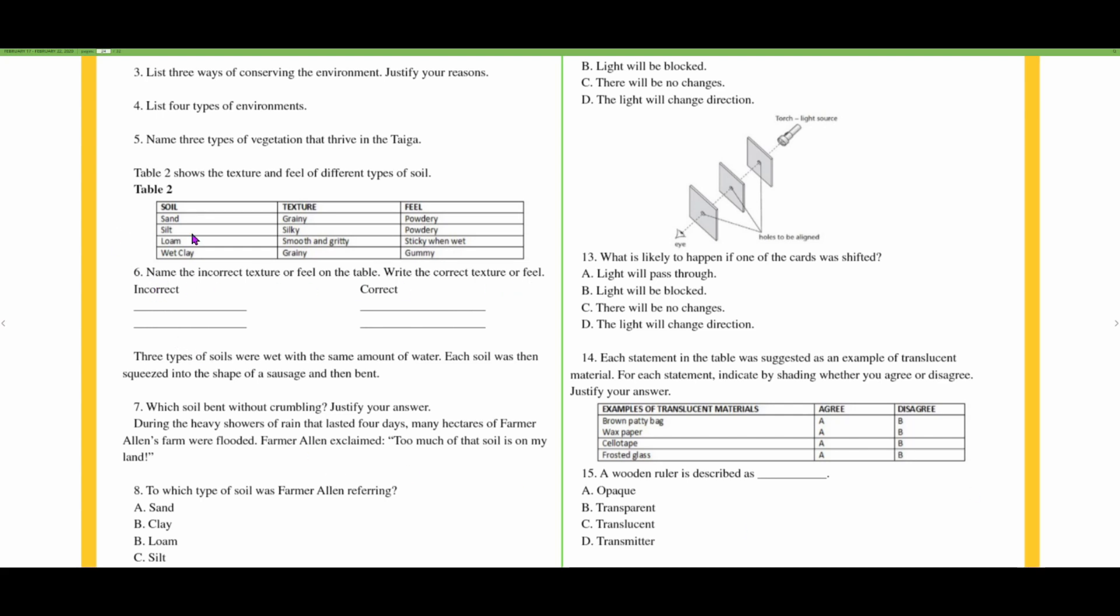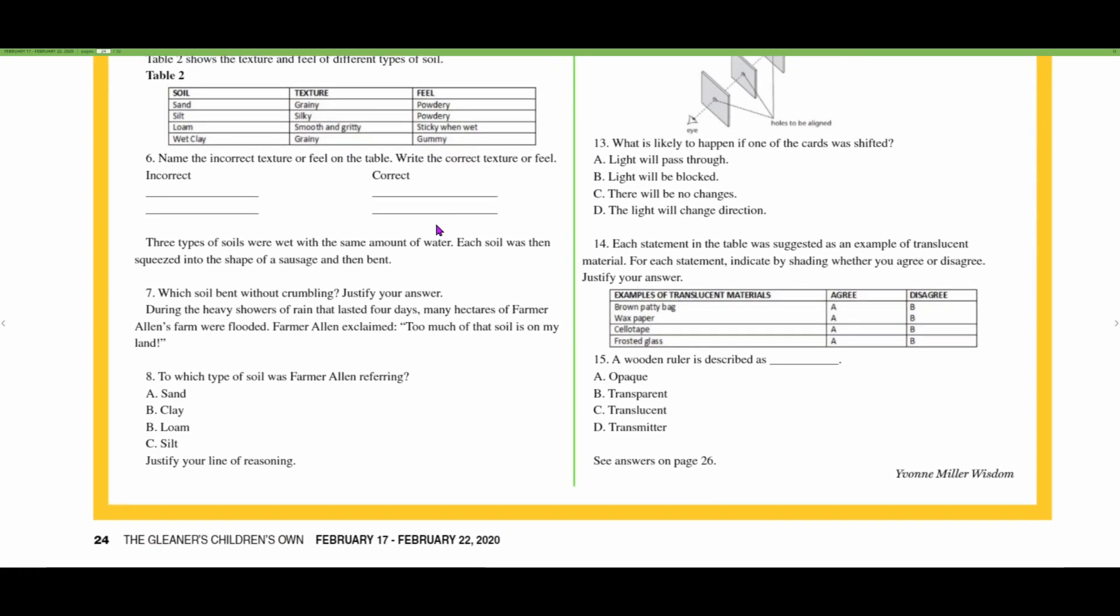Number six says name the incorrect texture or feel on the table and write the correct texture or feel. Looking at this table, I would focus on wet clay. They say it's grainy and gummy, but I know that it should be smooth and sticky when wet.